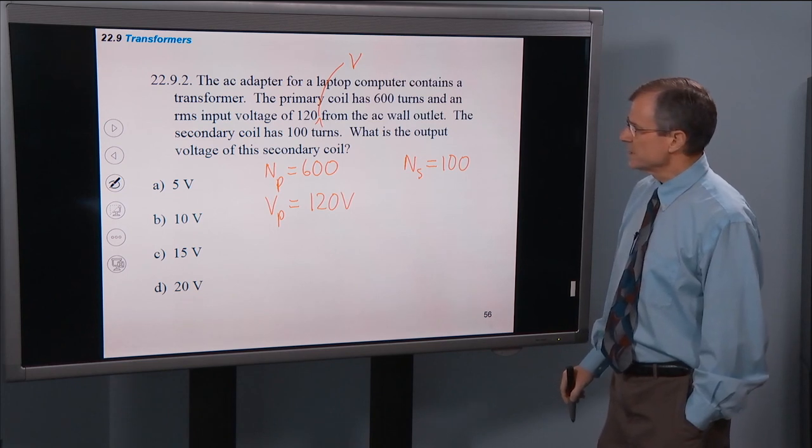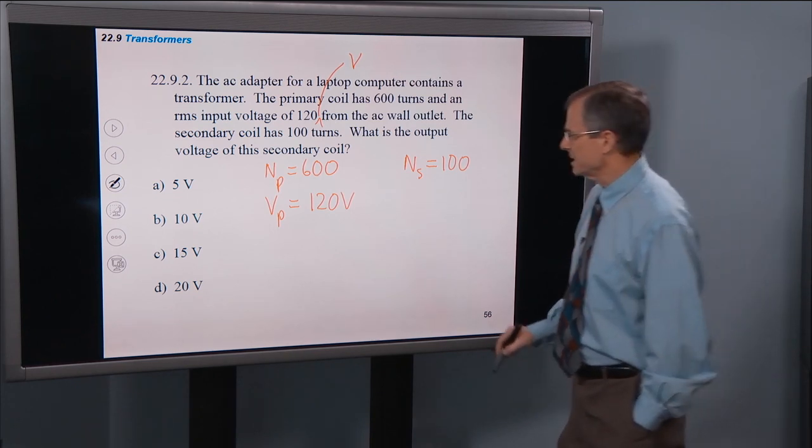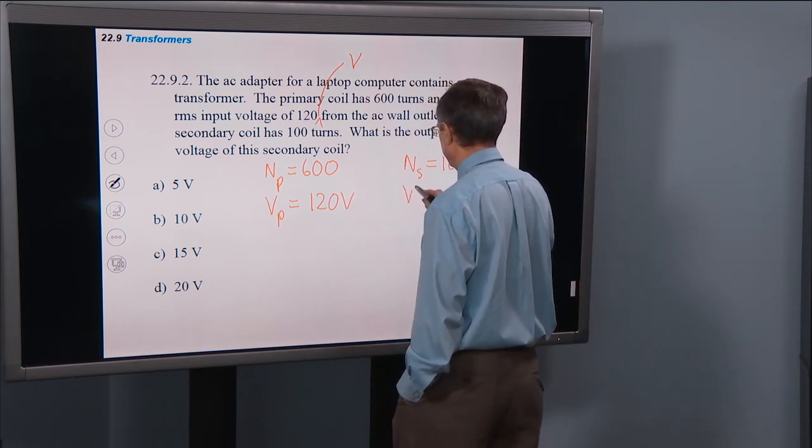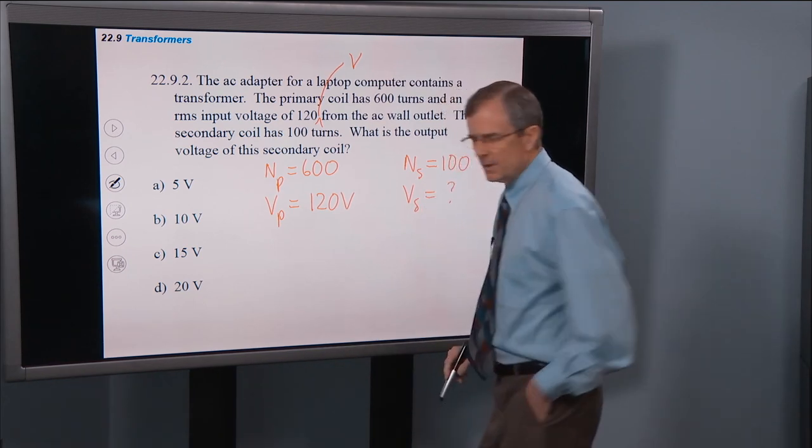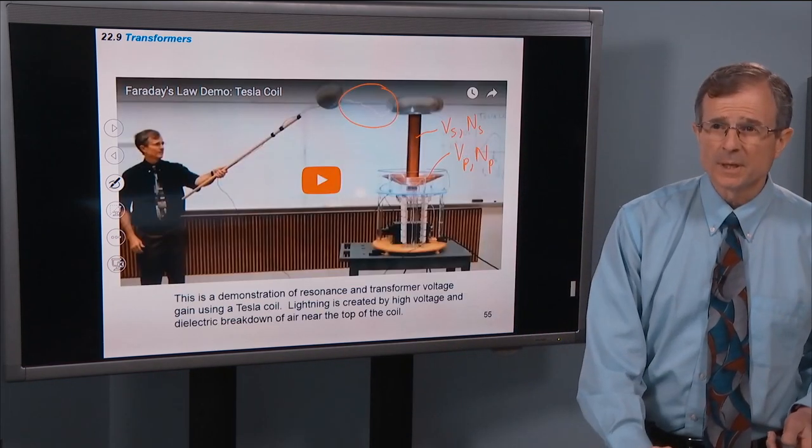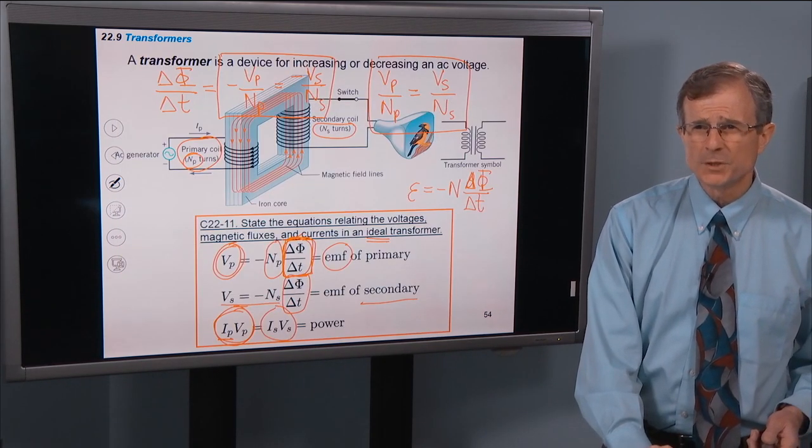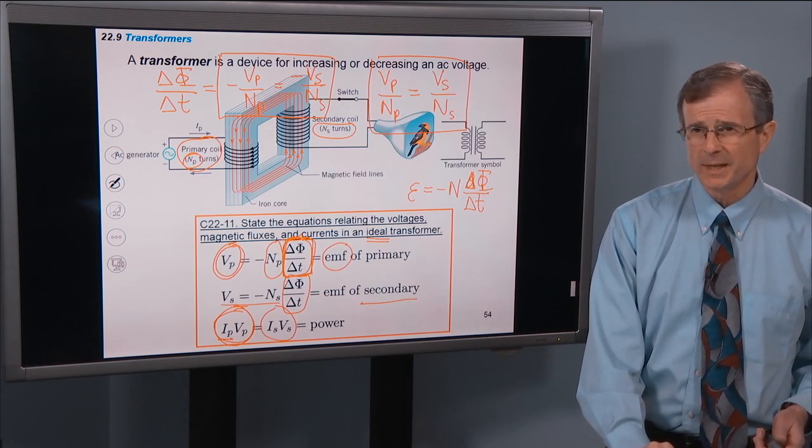And the question is, what's the output voltage of this secondary coil? Well, from this calculation we did right here, we showed that Vp over Np equals Vs over Ns.